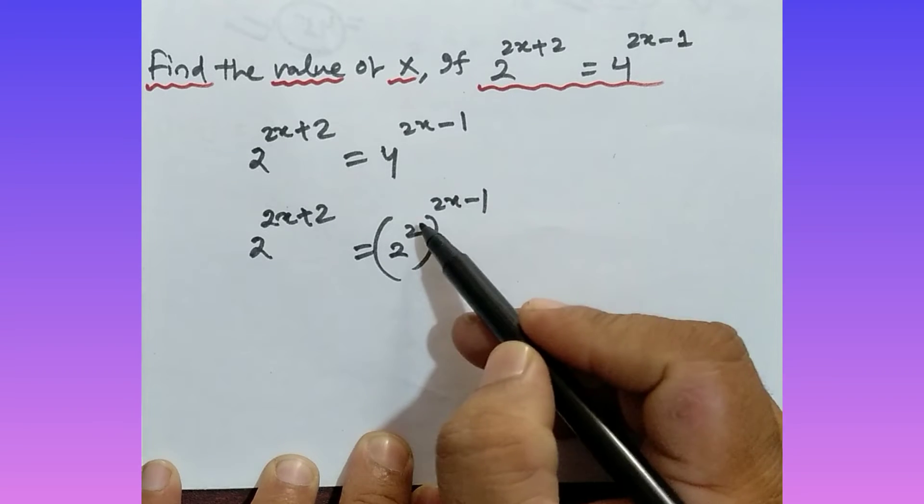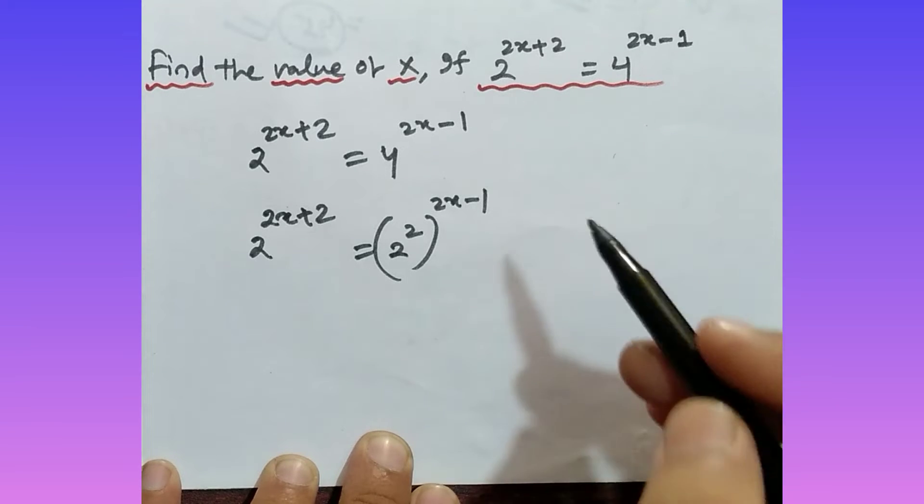Then again, a to the power m whole to the power n, what is the formula? You have to multiply, a to the power m into n, right.